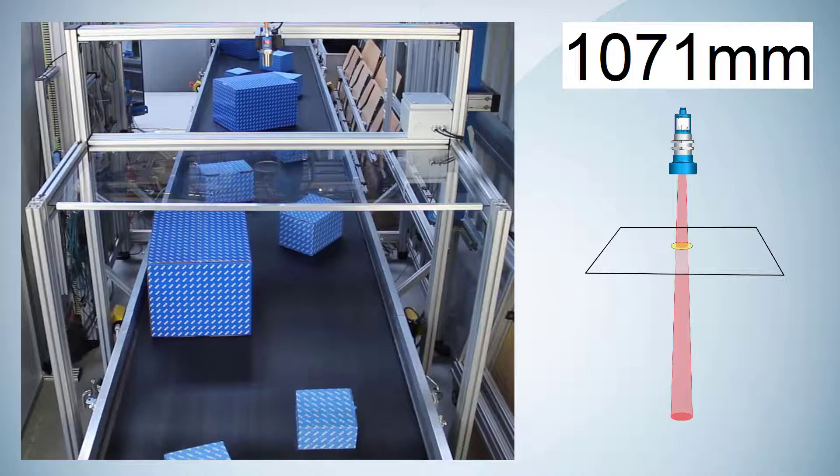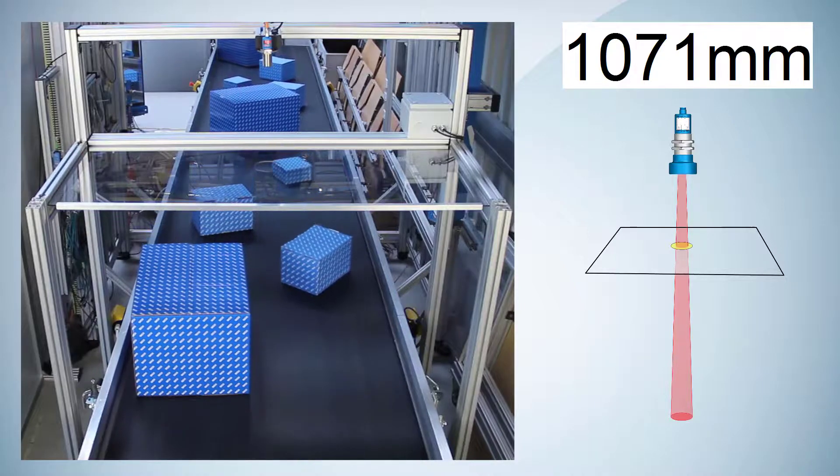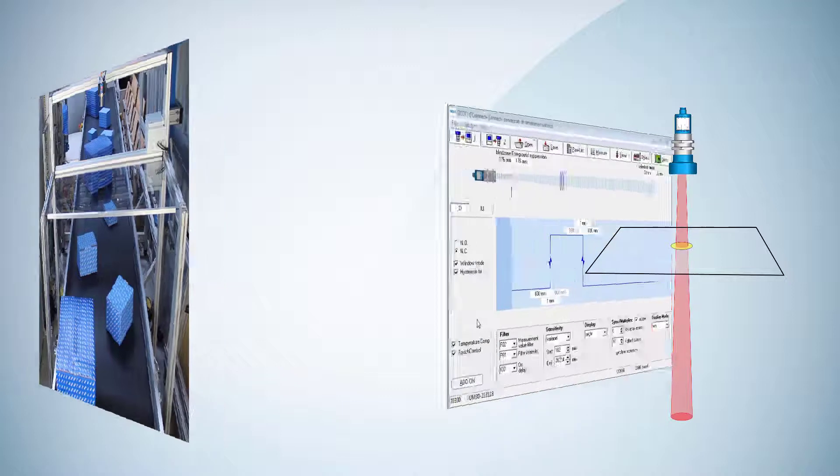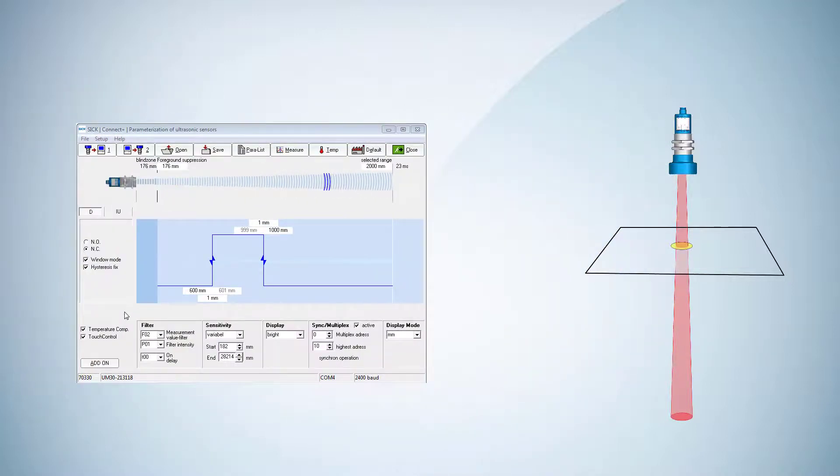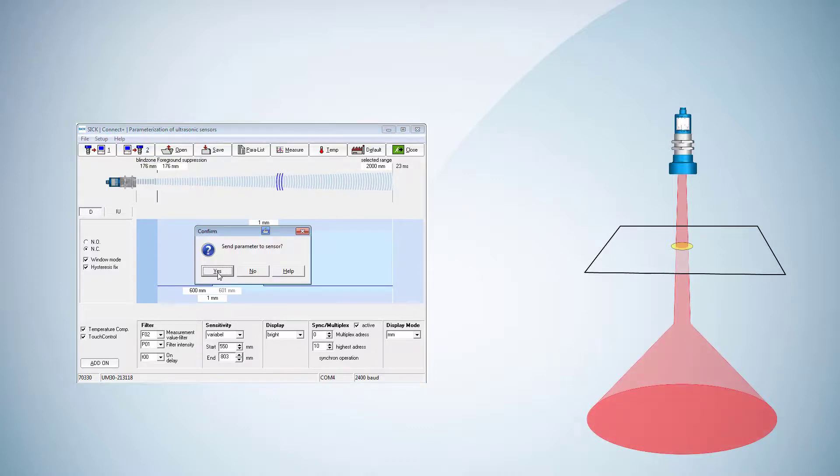To include all the boxes on the conveyor belt, we have to go once more into the software Connect Plus. We set the start value of the amplification increase below the acrylic glass and the end value close behind to have the highest sensitivity below the glass. We set the start value to 550 millimeters and the end value to around 800 millimeters and send the data to the sensor.